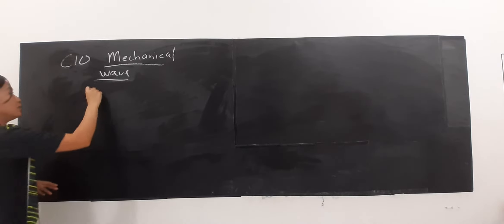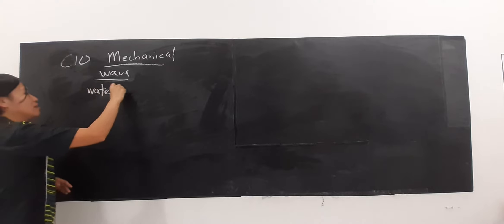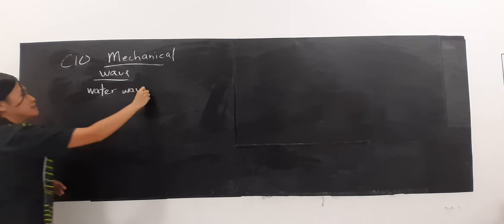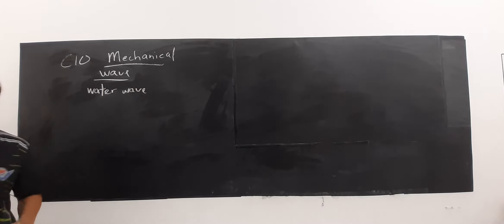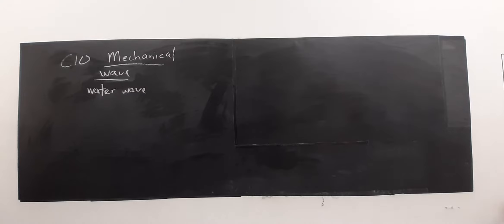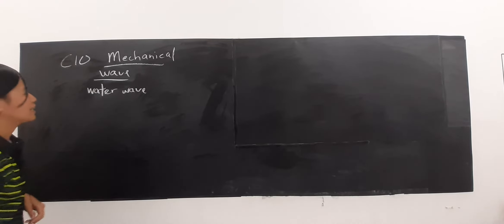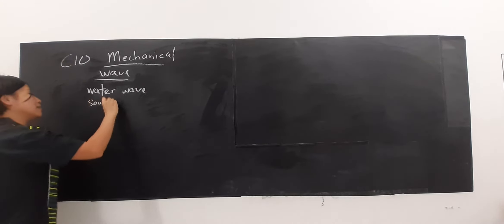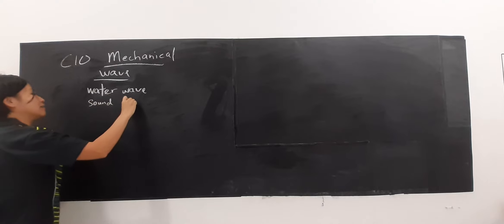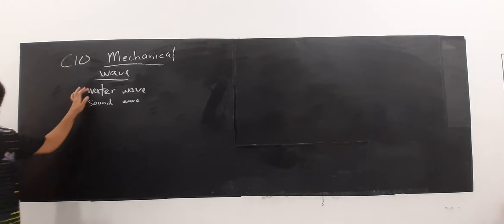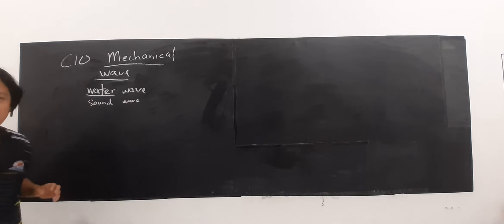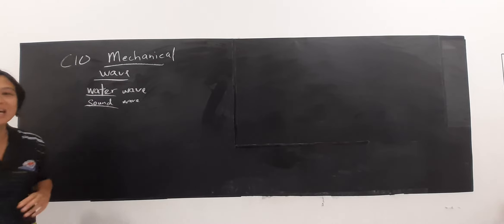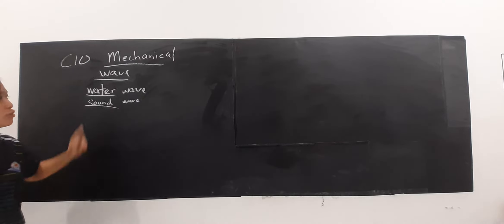What are examples of a wave that needs a medium? For example, Water Wave. What are other examples? For example, Sound Wave. Water Wave needs water as a medium to travel. Sound Wave also needs a medium to travel.